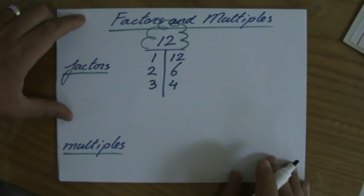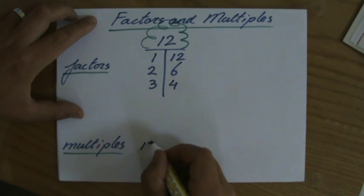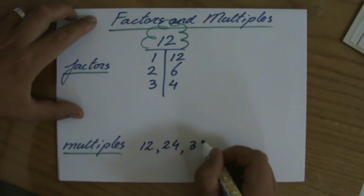Now what about multiples? You could say that multiples are timetables. So the first multiple of 12 will be 12, 1 times 12. The second multiple, 2 times 12, 24. So you can go on and on, 36.